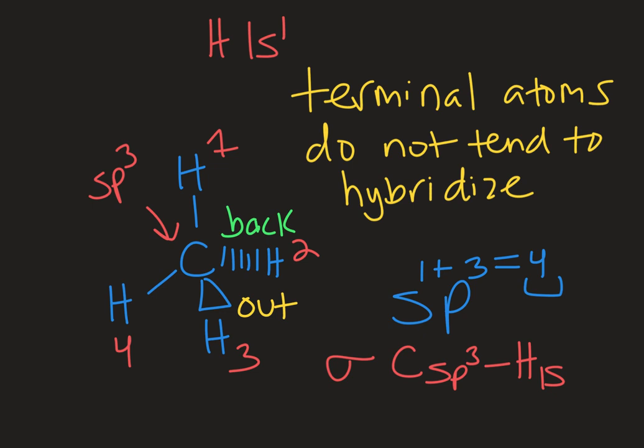There is an energy penalty to hybridize, but it allows for this more stable bonding pattern. With terminal atoms, they can already make the bond without having to hybridize. And so what I've just drawn here describes the type of bond that we see there. It's a sigma bond, a single bond between an H and a C.